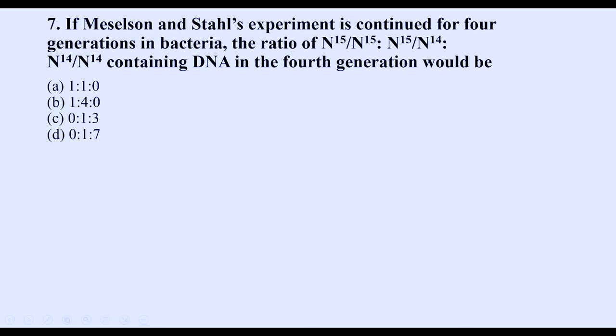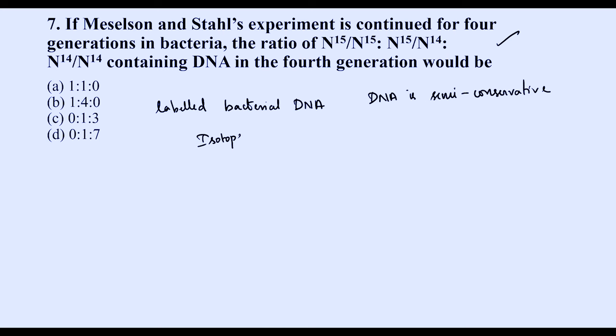Question seven is about the Meselson and Stahl experiment continued for four generations in bacteria. This experiment used isotopes of nitrogen — N15 (heavy) and N14 (normal) — to prove that DNA replication is semi-conservative. The bacteria E. coli were first cultured in the heavy isotope N15 medium.